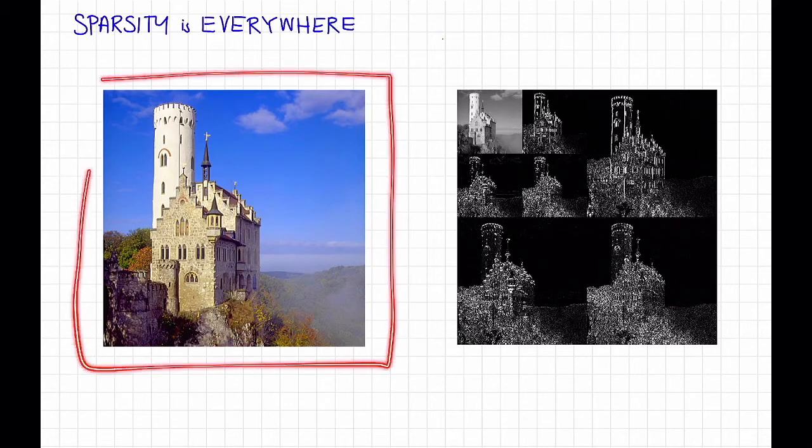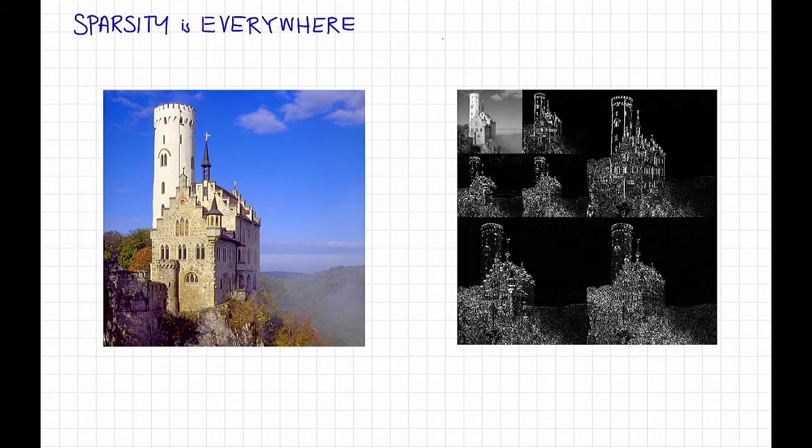For example, here's a nice picture of a castle. This picture is not especially sparse, in the sense that most of its pixels are not zero or approximately zero. However, when you take a discrete wavelet transform of this image, or at least the black and white version of this image, you get this.